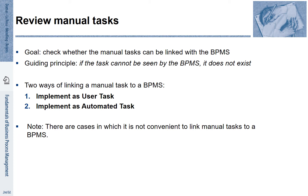For example, think of a manual task called picking an item from the warehouse. Classically, this was a manual task where a user walked through the warehouse and fetched particular items. In many warehouses, it has become a user task with partially automated steps. The workers carry scanners, and by using the scanners, they can change this manual task to a user task. They scan the item and in this way, the information system becomes aware of the status of this task.